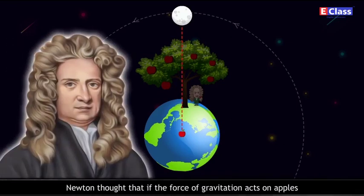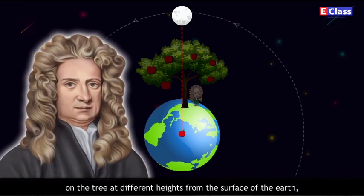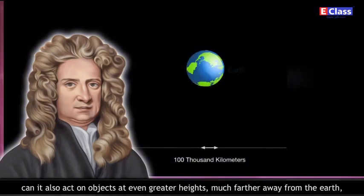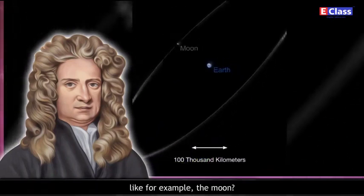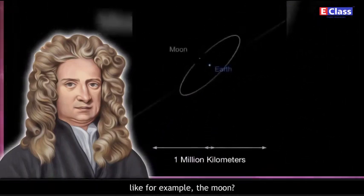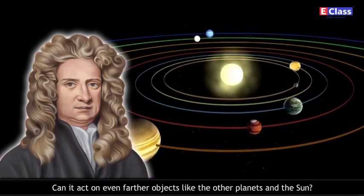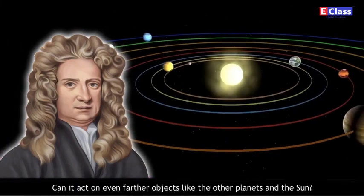Newton thought that if the force of gravitation acts on apples on the tree at different heights from the surface of the earth, can it also act on objects at even greater heights, much farther away from the earth, like for example the moon? Can it act on even farther objects like the other planets and the sun?